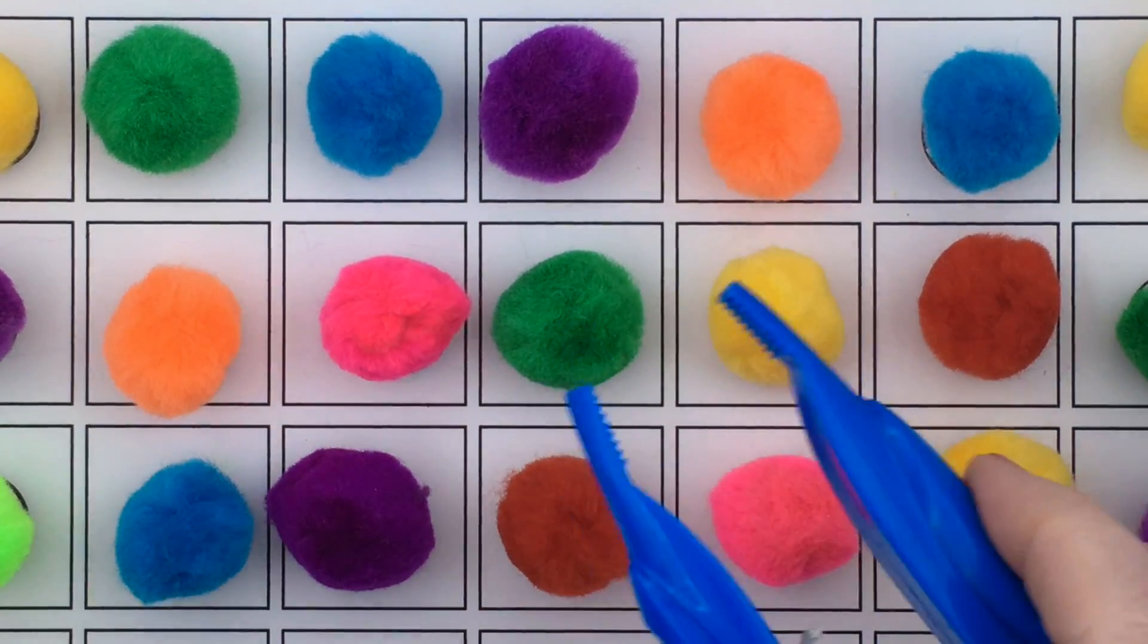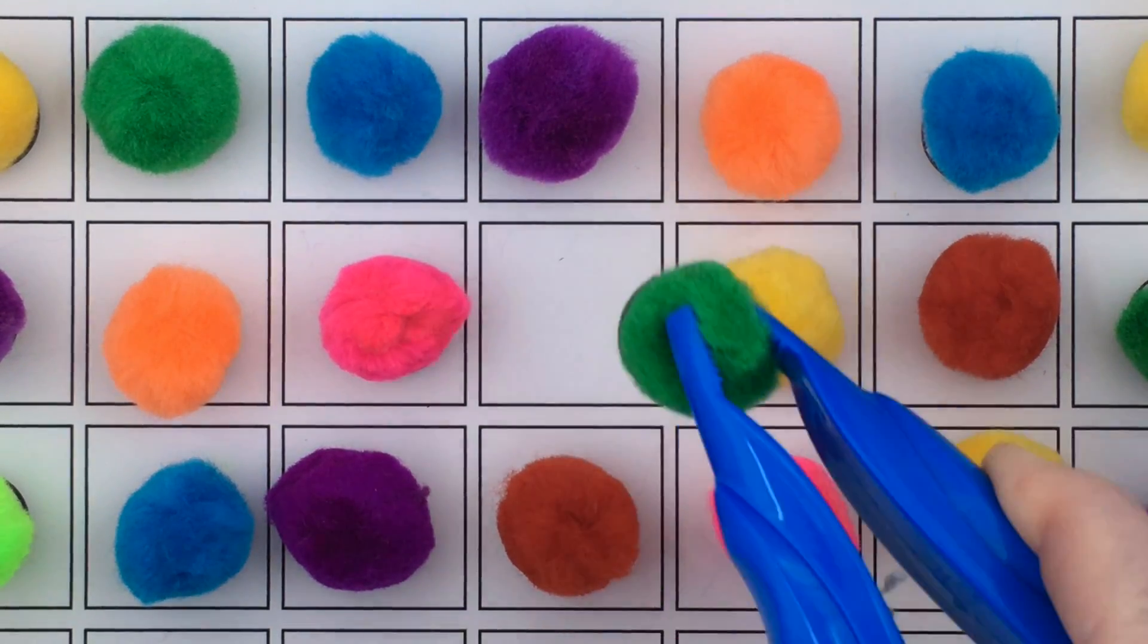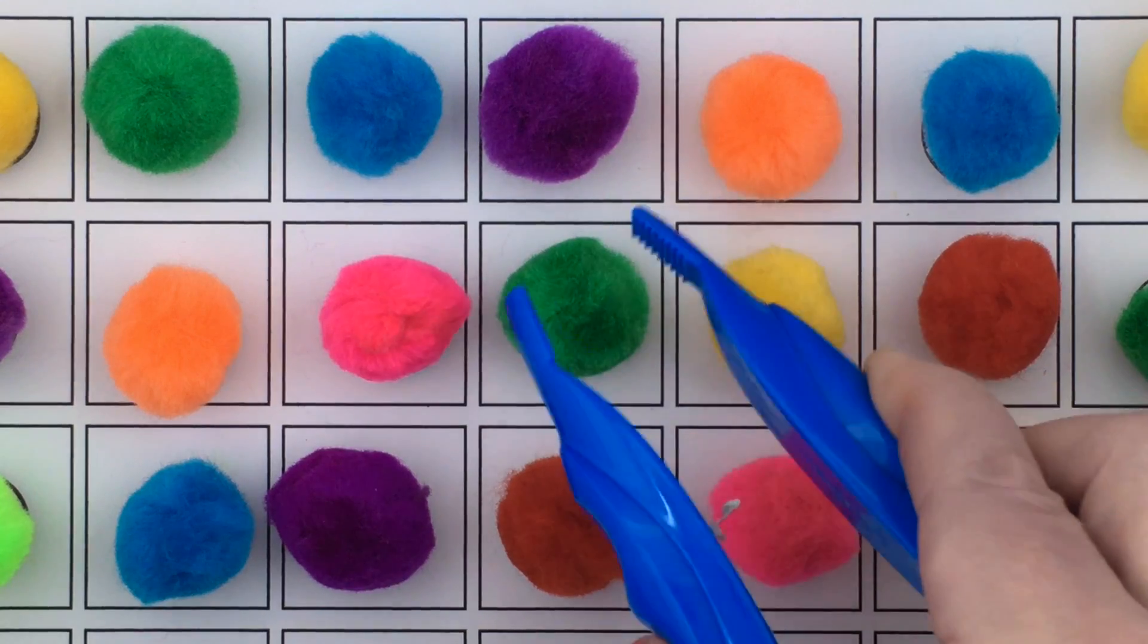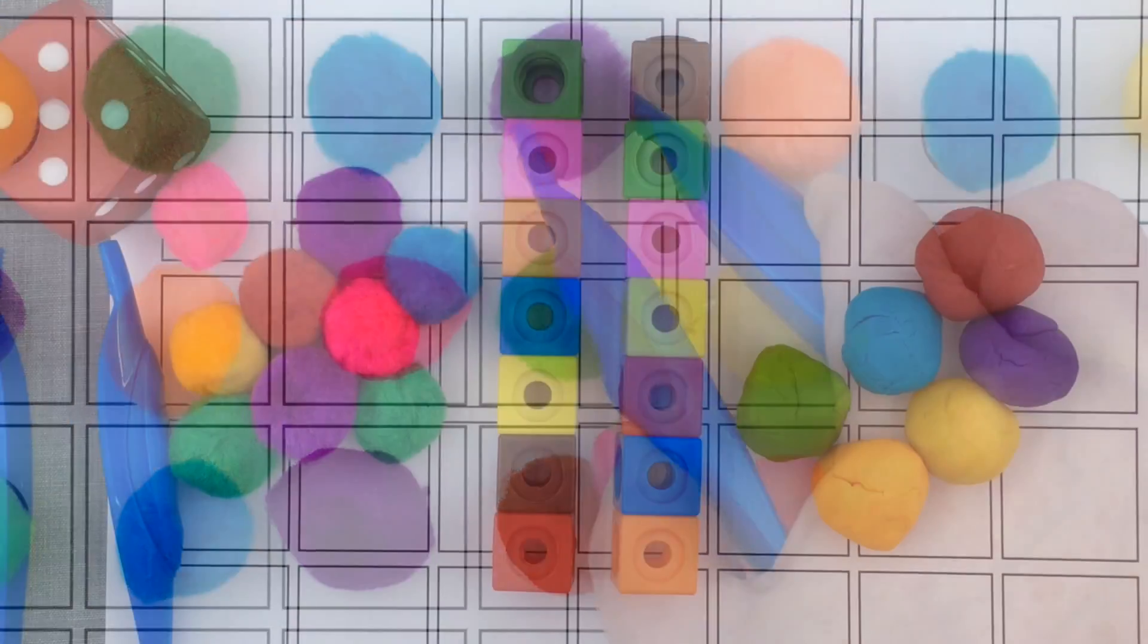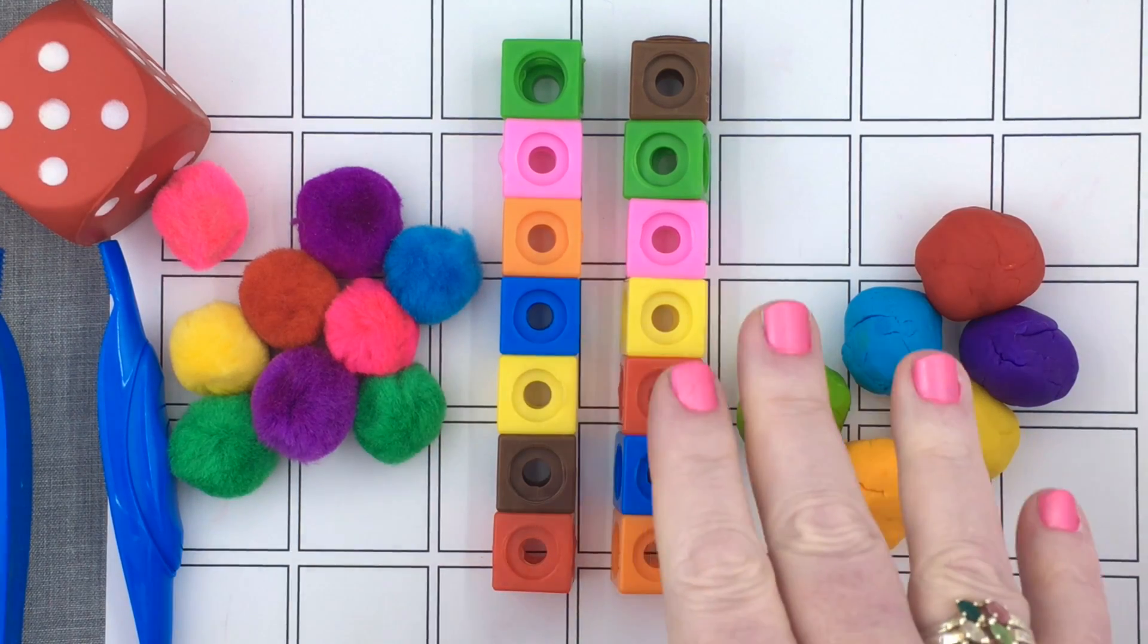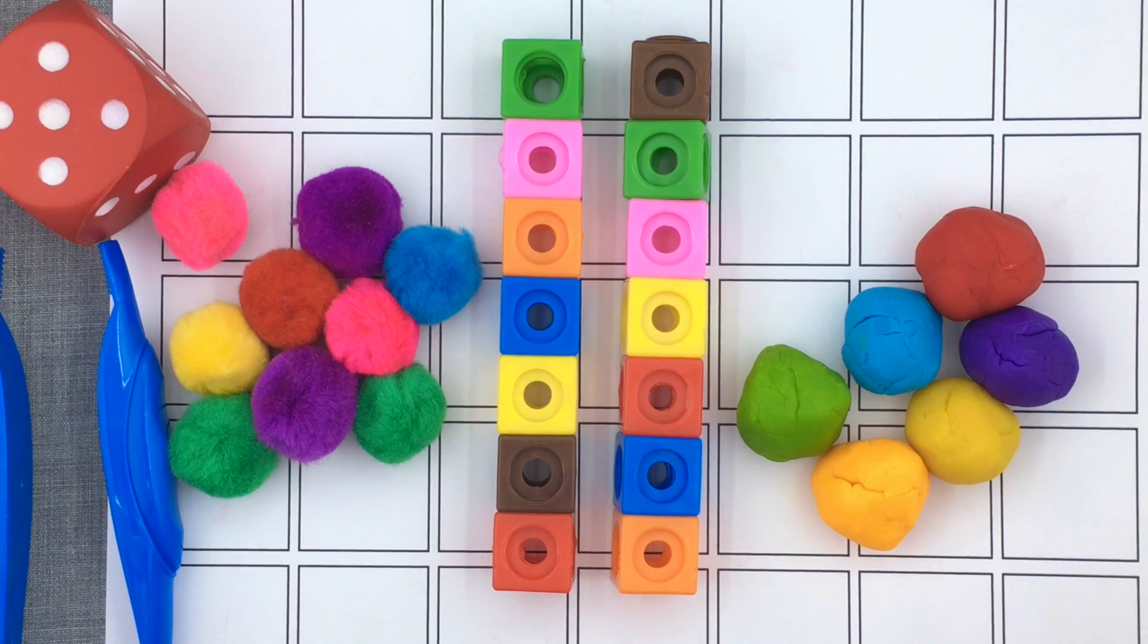For this activity, we use our tweezers to pick up the pom-poms and set them down in individual spaces after rolling the dice. You can find the link for my roll and count pattern below in the description box or at childcareland.com.